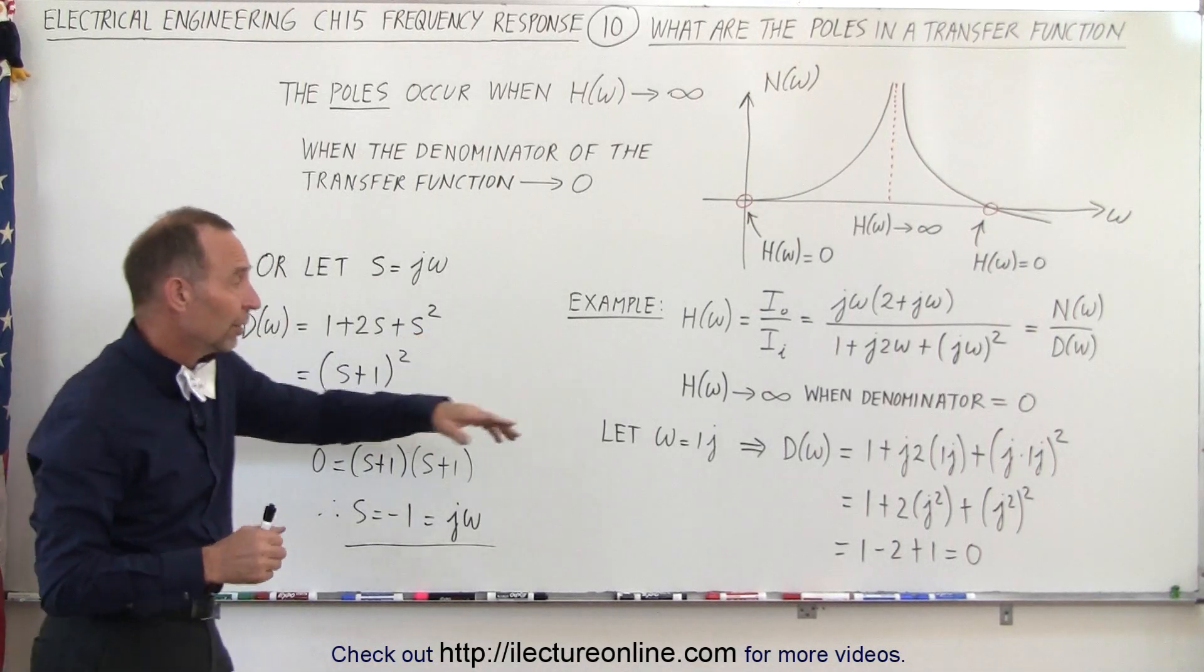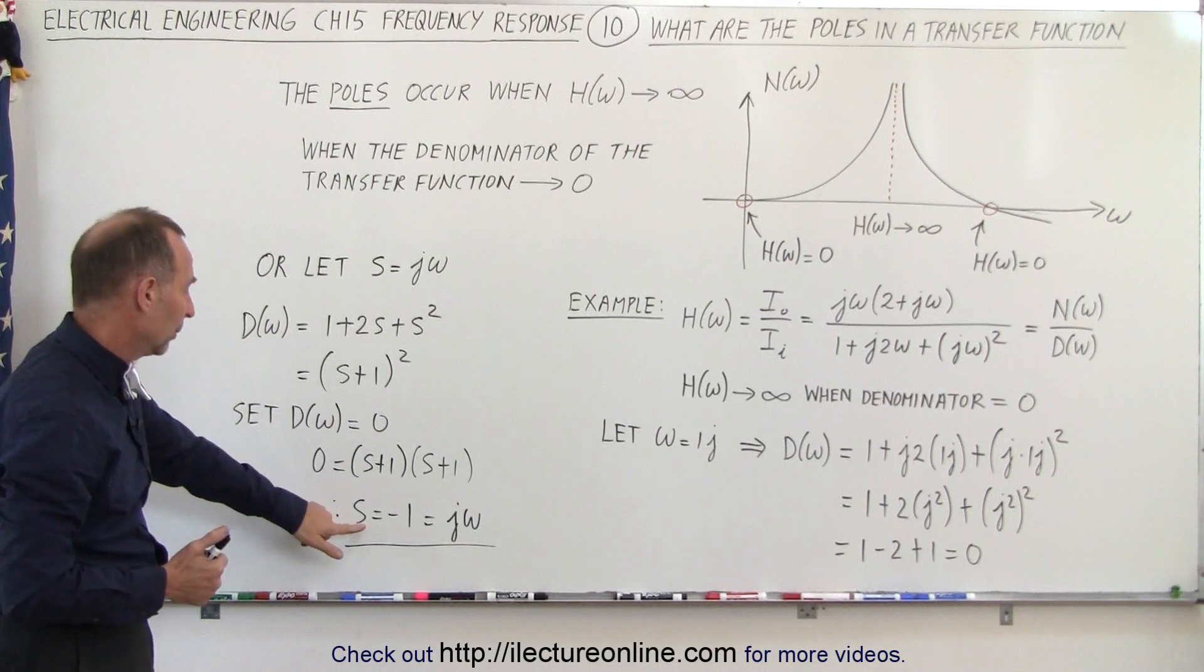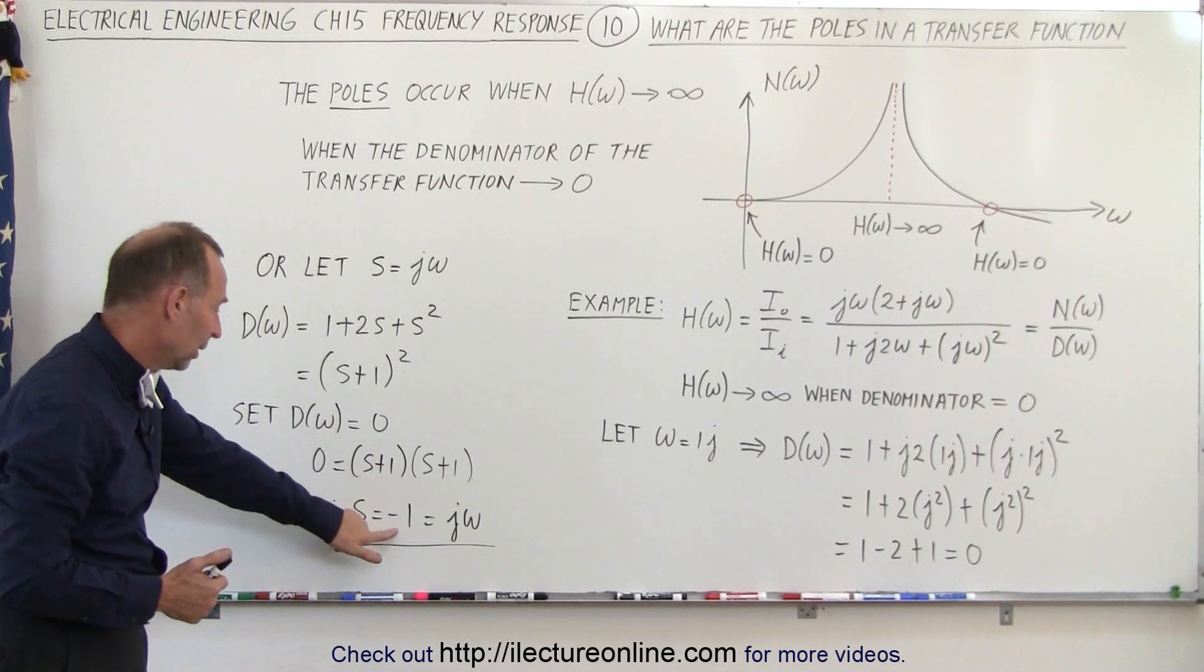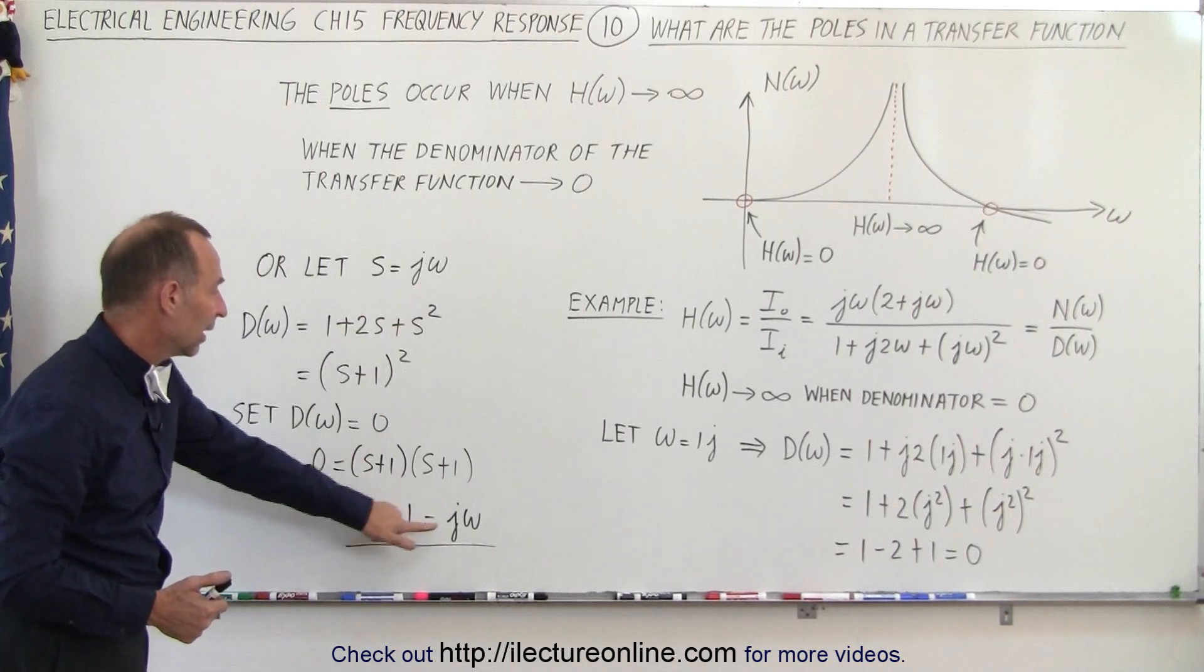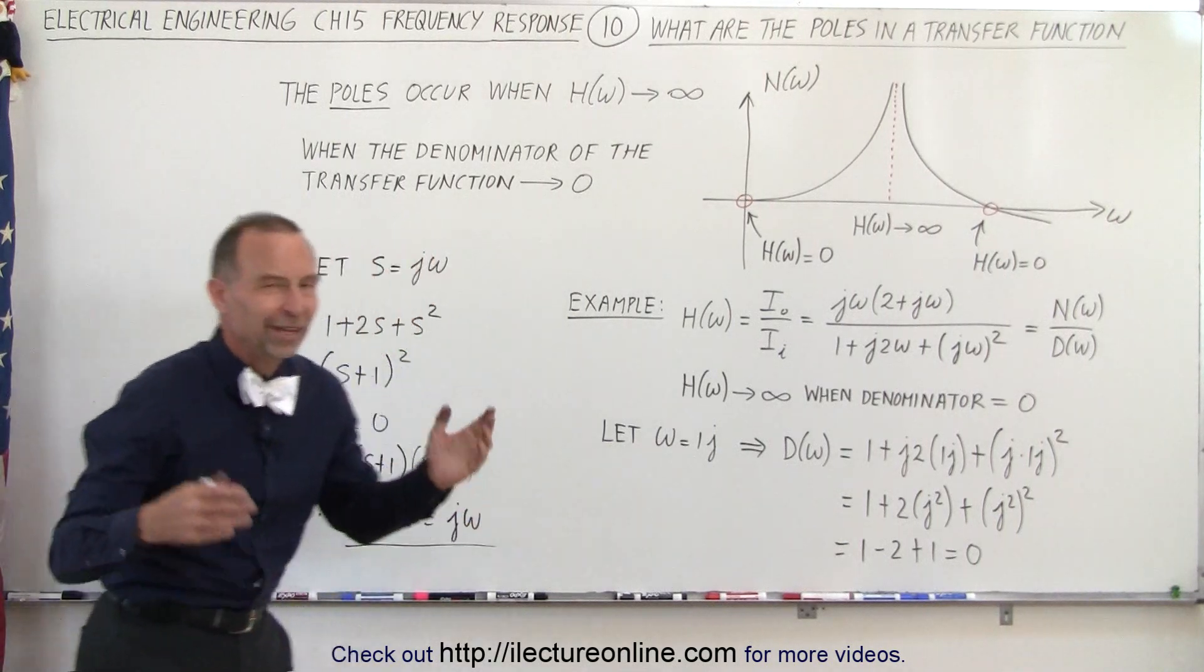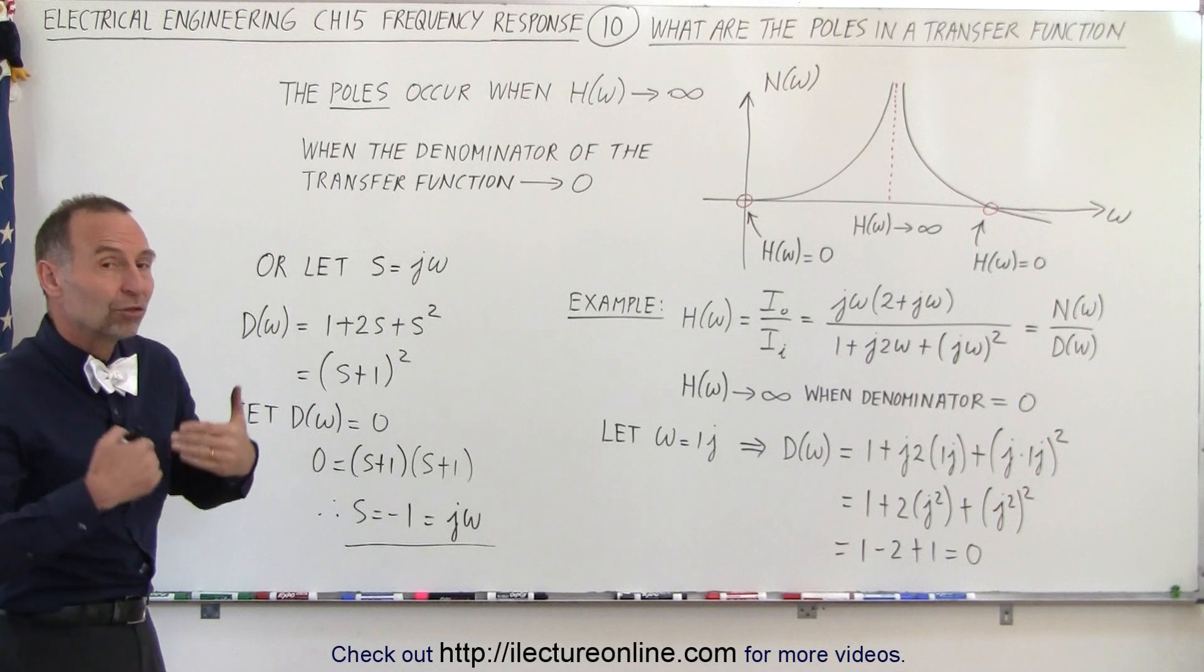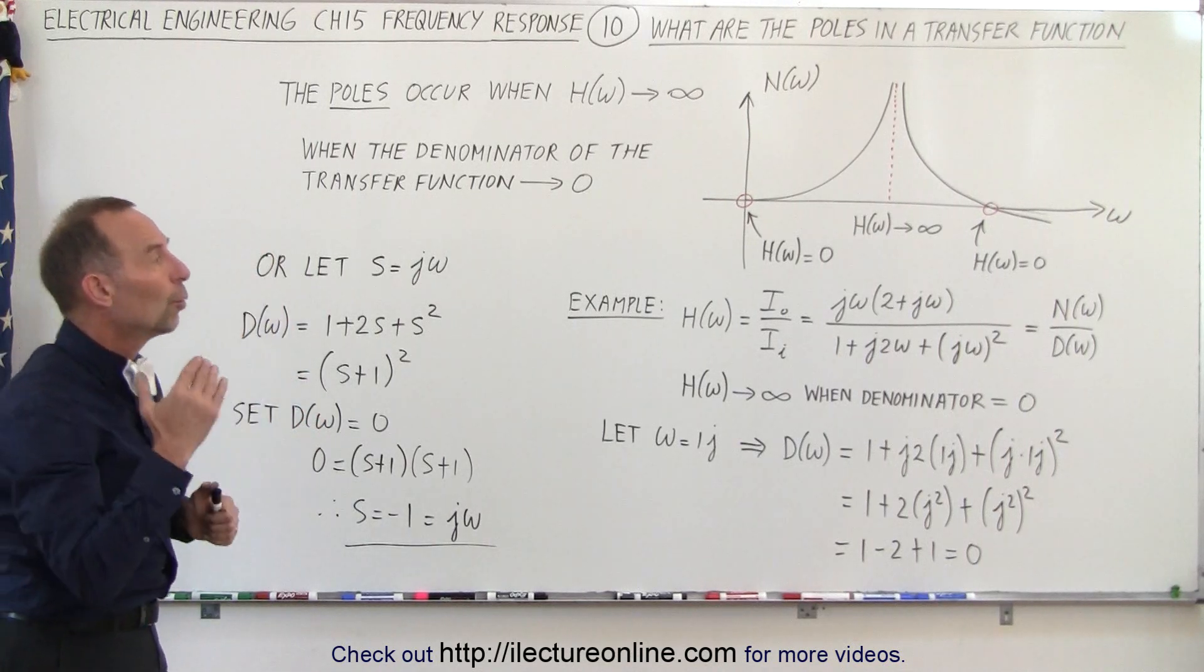And if s equals negative 1, since s is equal to j omega, then j omega equals negative 1, or omega equals 1j. That's actually the same value. So you can see that we can discover what the poles are, where the transfer function goes to infinity, when we have a denominator that then goes to zero for a particular value for omega.